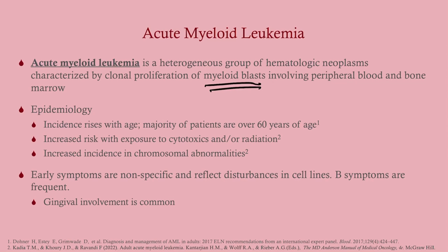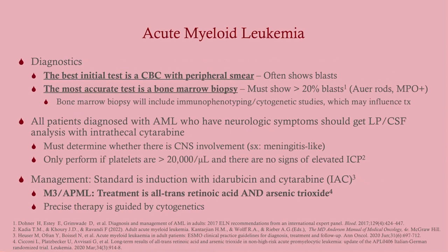Early symptoms are non-specific and very common in these patients. One feature that can set AML apart from ALL is gingival involvement, appearing as gingival hyperplasia — though it's not very sensitive. The key distinguishing factor is age: in a four-year-old with a leukemic picture, it's ALL three out of four times; in an older patient, it's almost certainly AML.